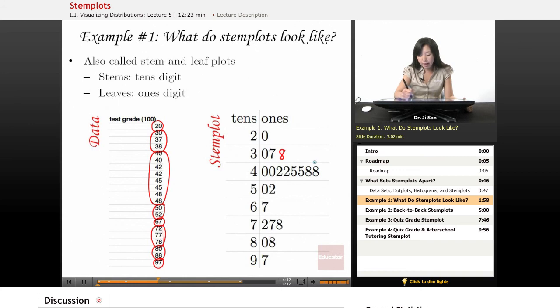Now, when you look at the stem plot, to read each of these values, you can't read this as 3078. You have to read it as a 30, a 37, and a 38. And this is a 40, a 40, a 42, 42, 45, 45, 48, 48.